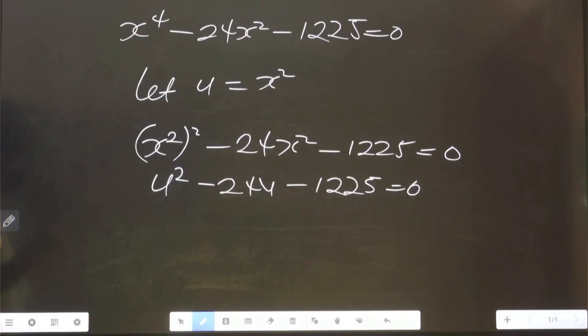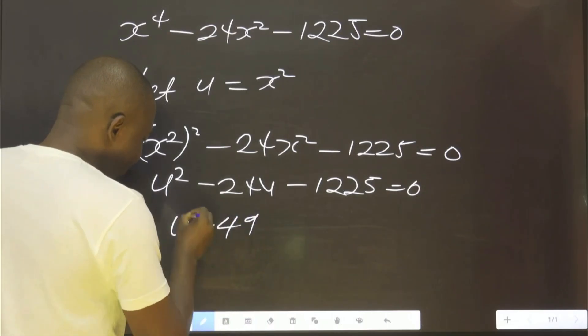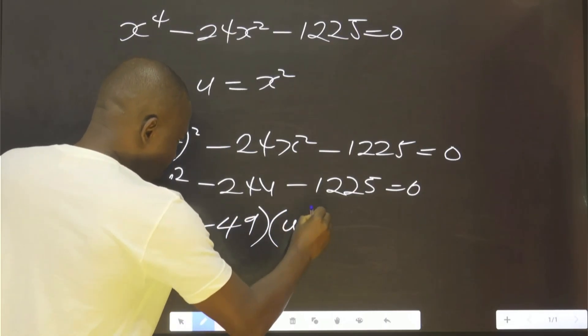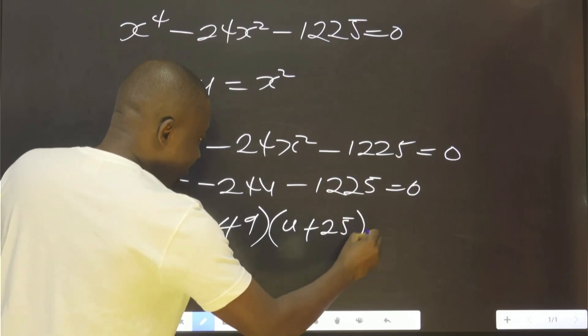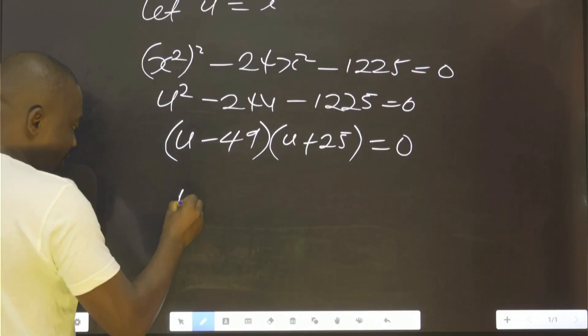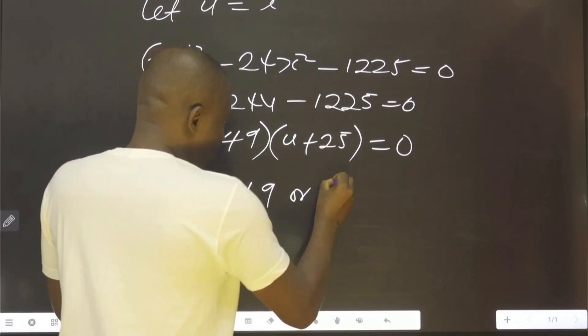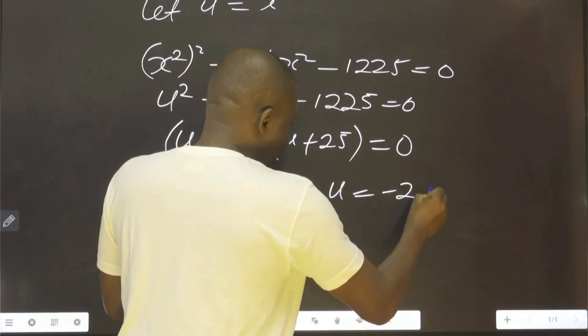If we factorize this, we're going to have (u - 49)(u + 25) = 0. So you agree with me, therefore u is equals to 49 or u equals to -25.